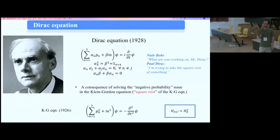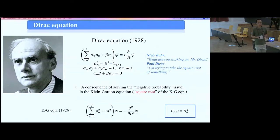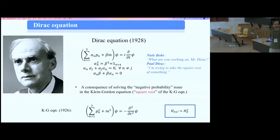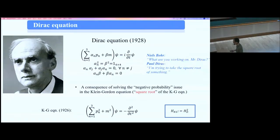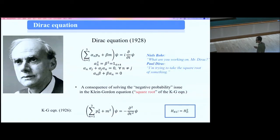Dirac was thinking about how to take the square root of the whole Klein-Gordon equation. He took a four-by-four matrix, calling them alpha and beta, as coefficients before the momentum and the mass of the electron, in such a way that these matrices square to the identity via anti-commutation. If you square this Hamiltonian you get precisely the Klein-Gordon Hamiltonian that fulfills the relativistic dispersion relation.